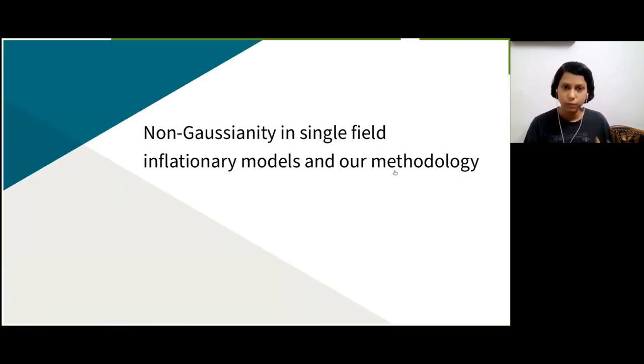In single field inflationary model, non-Gaussianity can arise from non-linear dynamics because of the self-interaction of inflaton. So, we can write action for the inflaton field, whose zeroth order will give us the background dynamics. Second order in R will give perturbation, whose two-point correlation gives the power spectrum. And the third order action in R will give us interaction terms proportional to R-square, which can be reflected in bispectrum.